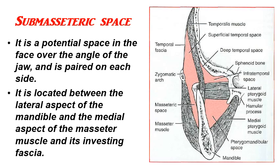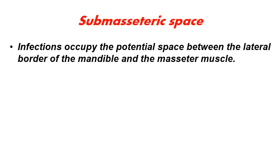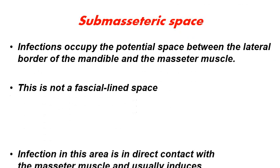The infection in this area occupies a very limited potential space between the lateral border of the mandible and the masseter muscle, leading to severe pain. This is not a fascial-lined space, and accordingly the infection is in direct contact with the masseter muscle. It usually induces intense spasm of the muscle, resulting in severe trismus — the patient cannot open their mouth completely.